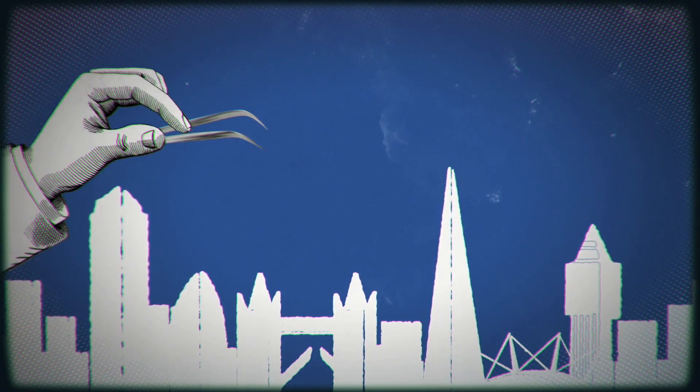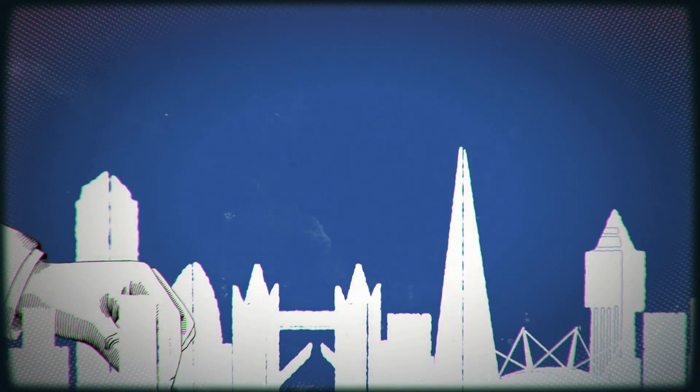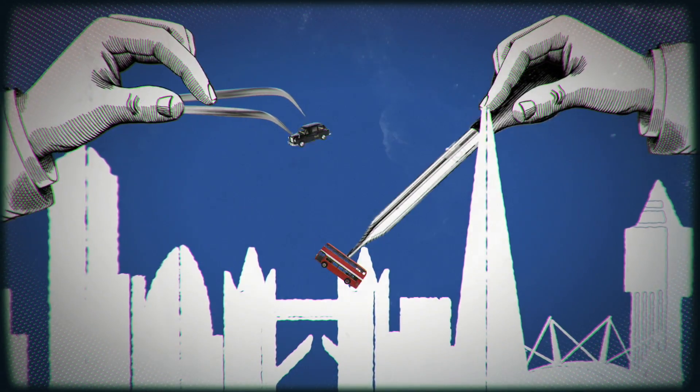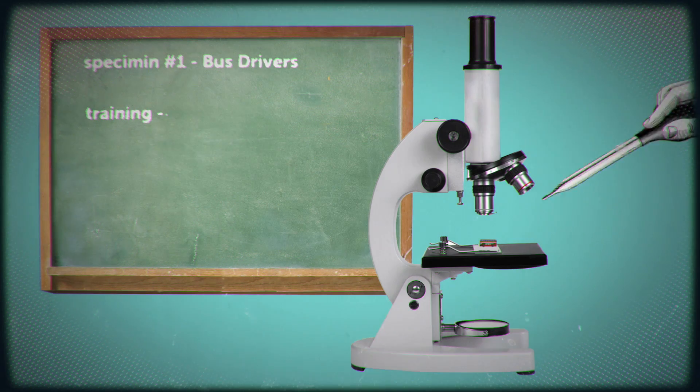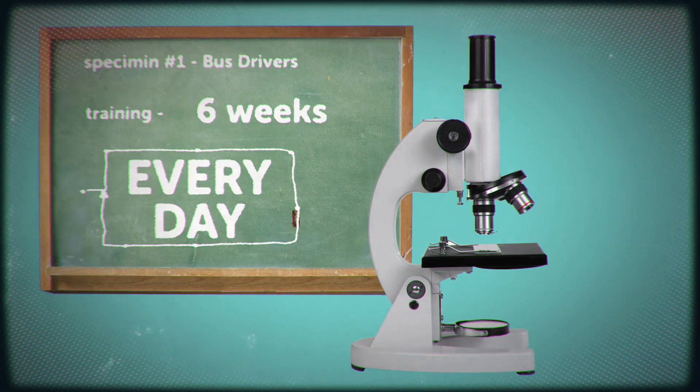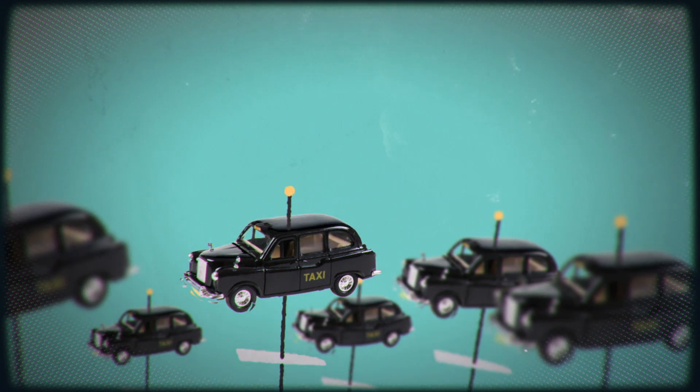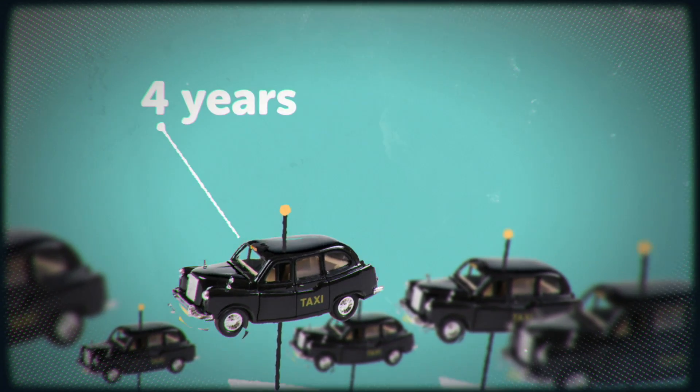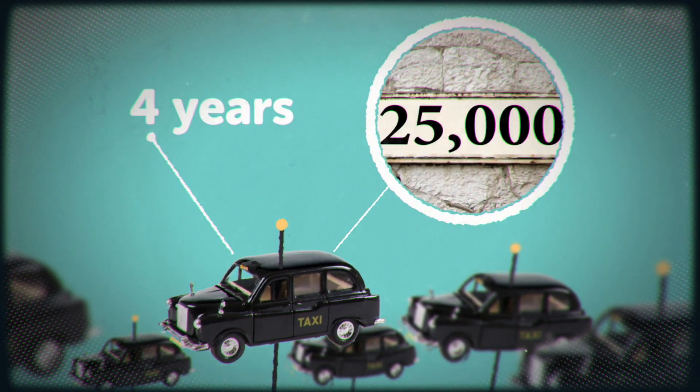In 2000, researchers began to investigate a group of London taxi and bus drivers. The bus drivers trained for six weeks, and then drove the same routes every day. Whereas the taxi drivers had trained for up to four years, memorising some 25,000 streets.